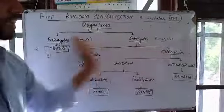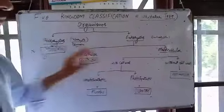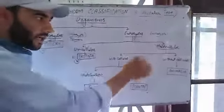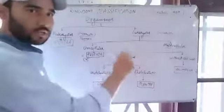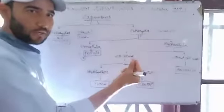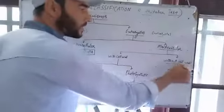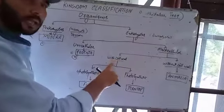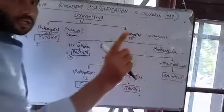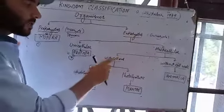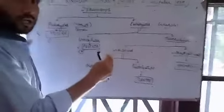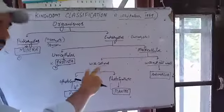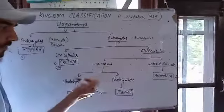The multicellular organisms are then further divided. One criterion is the presence or absence of a cell wall. Some multicellular organisms have a cell wall, and those organisms with a cell wall are again divided into two sub-categories.